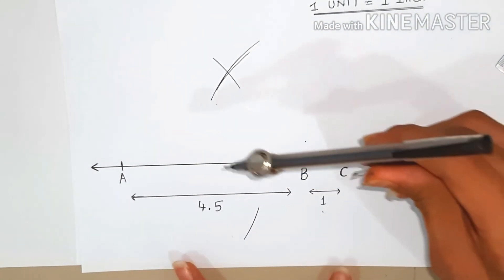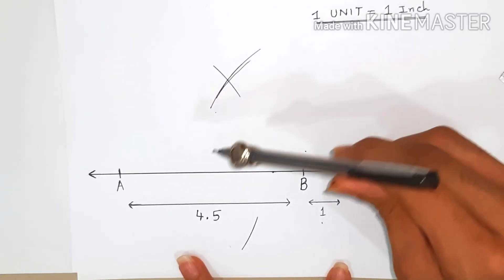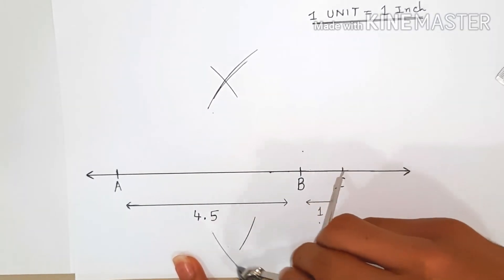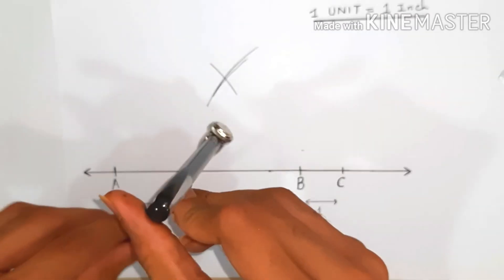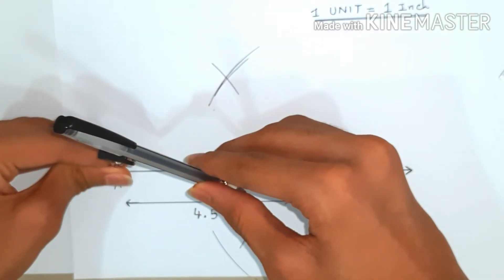Now we'll do the same on the other side. We'll take A as the center and do it, then we'll take C as the center. If it doesn't cut, then you need to extend it a little bit, but make sure that the radius is the same.